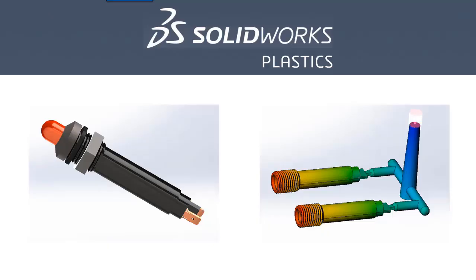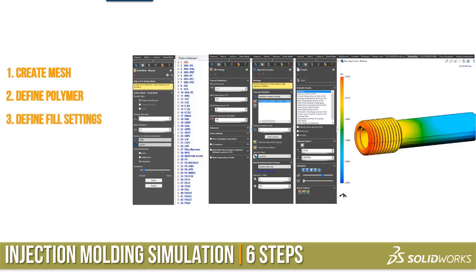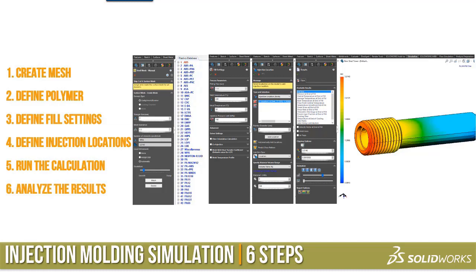Now we're going to look at SOLIDWORKS Plastics for plastic injection molding. We're going to look at an LED light and we're going to mold the housing. Similar to Click to Cast, SOLIDWORKS Plastics uses six simple steps to set up the analysis: we create the mesh, we define the polymer, we define the fill settings, we define the injection locations, we run the calculations, and then we analyze the results.